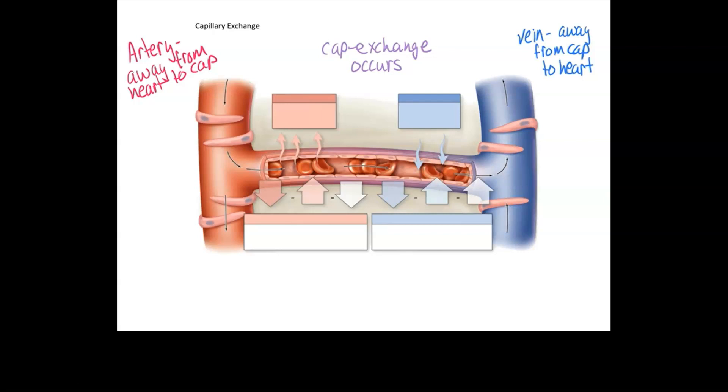In this picture, we have an arterial bringing blood from the heart into the capillary. This middle part represents the capillary where exchange is occurring. Blood flows through the capillary, exchanges with the cells, then goes to the venule, which takes it back to the heart.